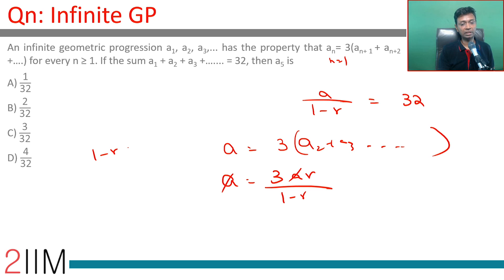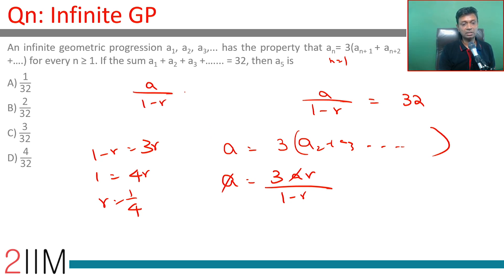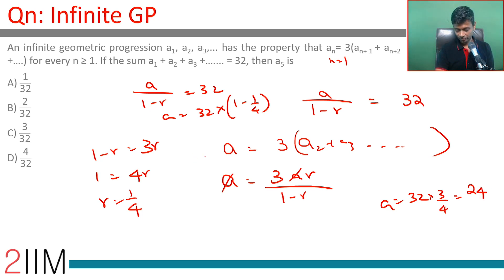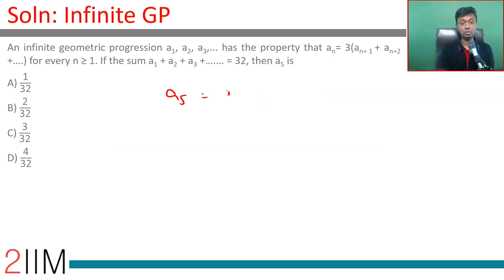This gives 1 minus r equals 3r, so 1 equals 4r, and r equals 1/4. Then from a divided by (1 minus r) equals 32: a equals 32 times (1 minus 1/4) equals 32 times 3/4, which is 24. Now we want to find a5.